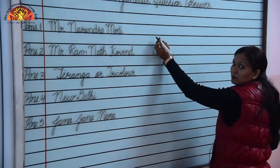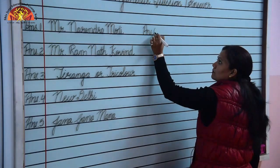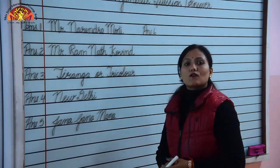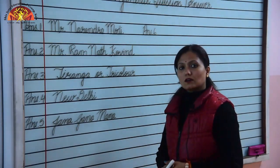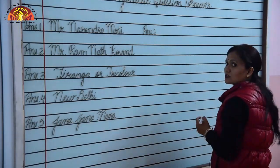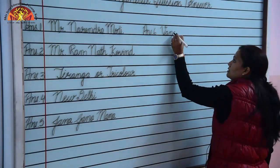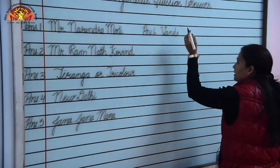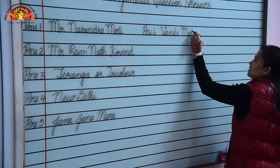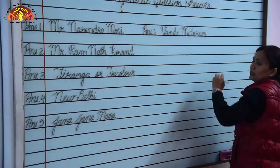Answer 6: What is our national song? Vande Matram is our national song. Spelling: V-A-N-D-E M-A-T-A-R-A-M. Vande Matram.